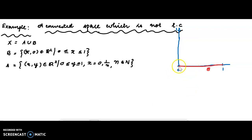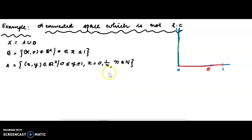Also included are the vertical segments at x equal to 1/n, where n equals 1, 2, 3, ... with y ranging from 0 to 1.